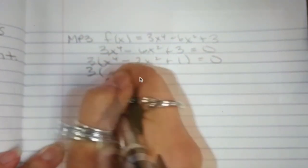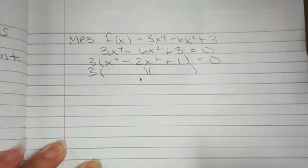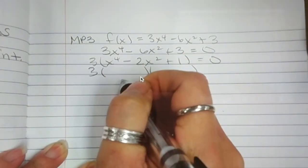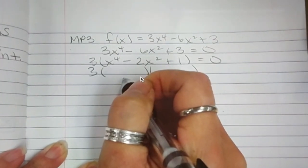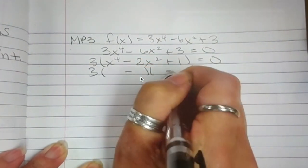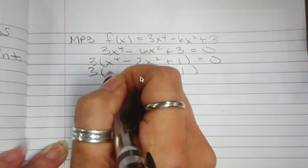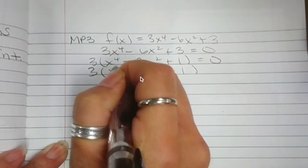X to the 4th minus 2x squared plus 1. Okay. You should be able to recognize this. What is it? What are my signs? Start there. Negative, negative. You need to have a 1 here. So, this is 1. And the ones in front are? X squared.